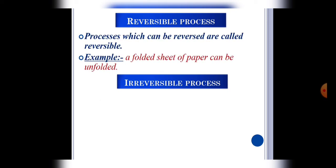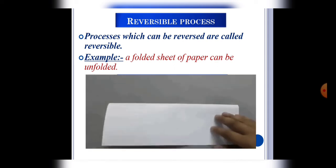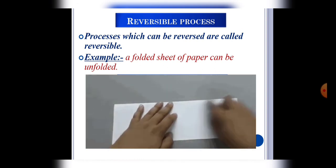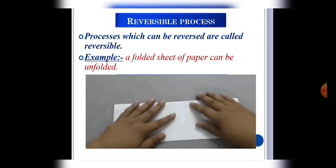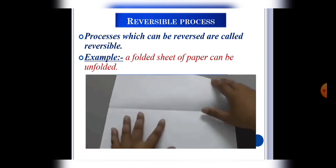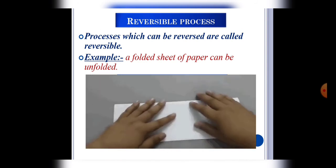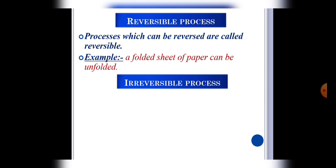For example, we can get back this folded sheet by unfolding it. Apart from this, melting of ice, stretching of rubber band are also reversible processes.